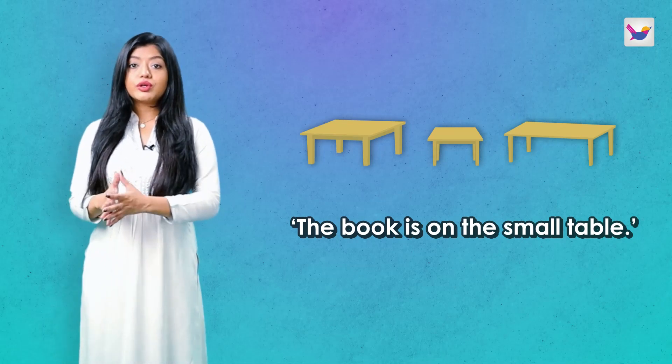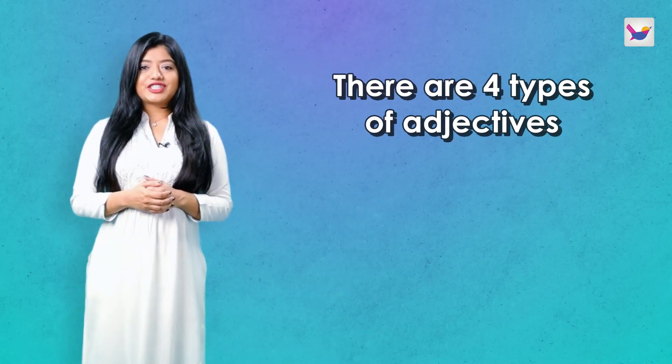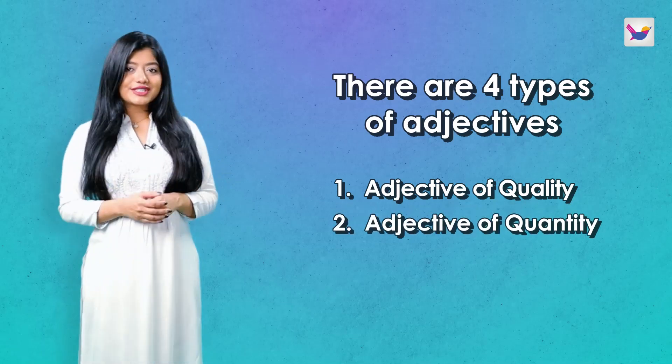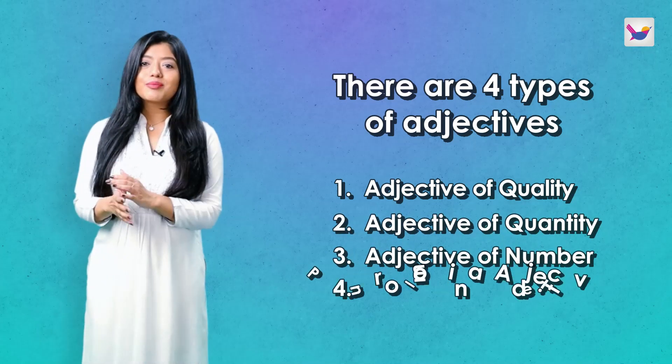Nouns and verbs in the adjective — the sentence will complete the sentence. The sentence will add detail and depth. We will say that Shumi is wearing a green sari. Green sari is an important part of the sentence. Let's start with types of adjectives. There are mainly four types of adjectives: Adjective of Quality, Quantity, Number, and Pronominal Adjective.